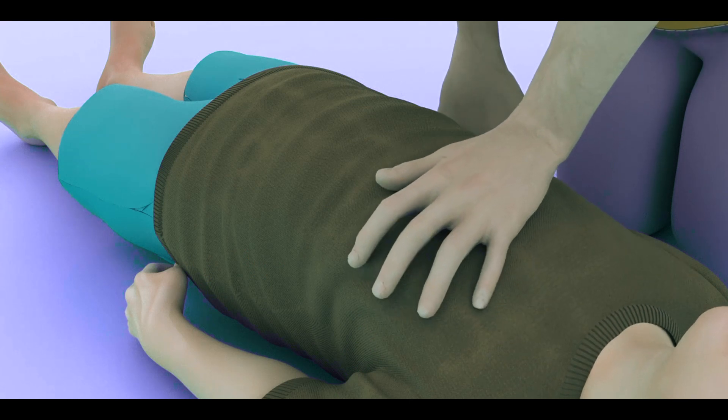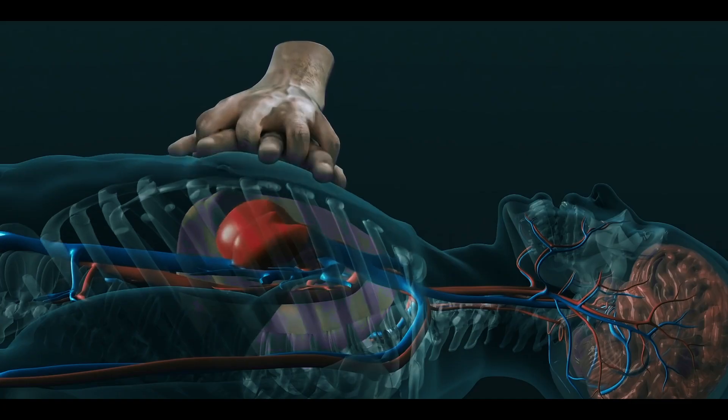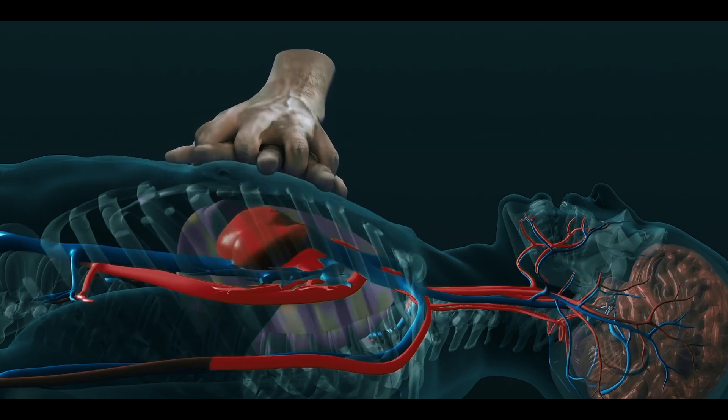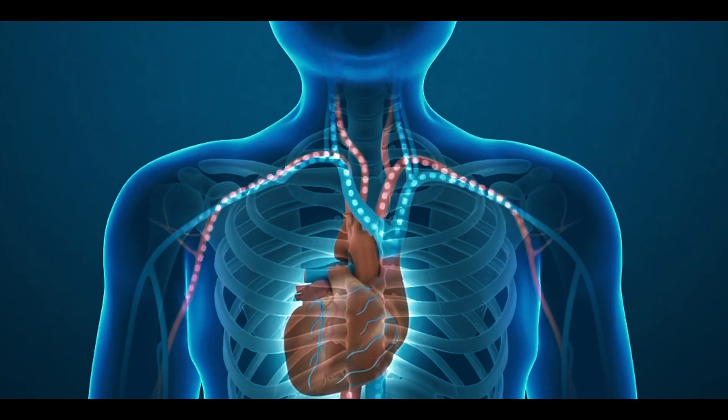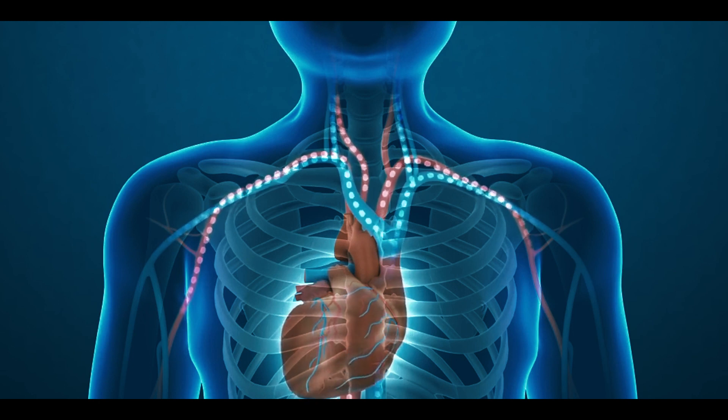The CPR procedure includes chest compressions, which push blood from the heart through the body, and mouth-to-mouth breathing, which provides oxygen to the lungs to support circulation and oxygen levels.